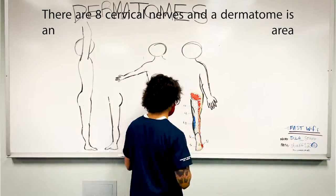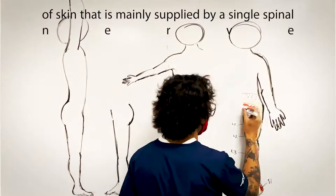There are eight cervical nerves, and a dermatome is an area of skin that is mainly supplied by a single spinal nerve.